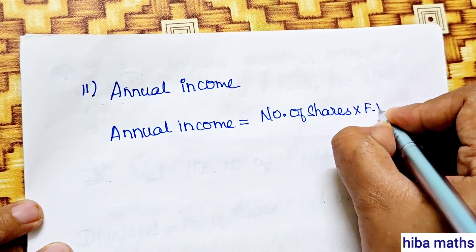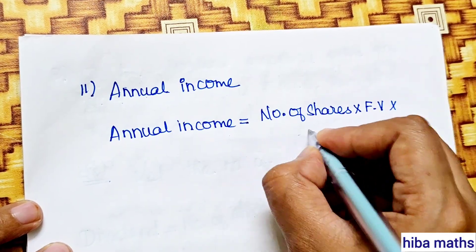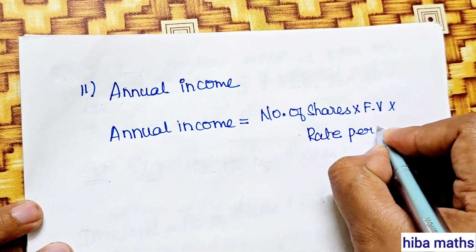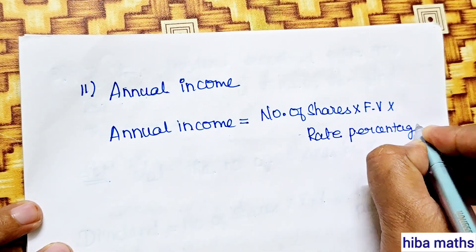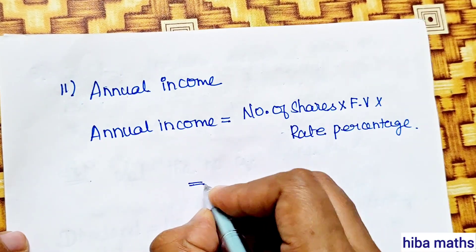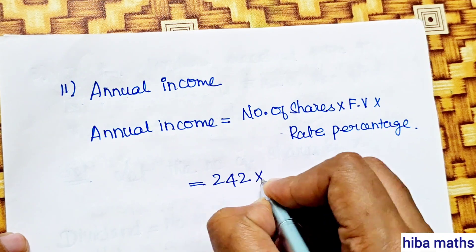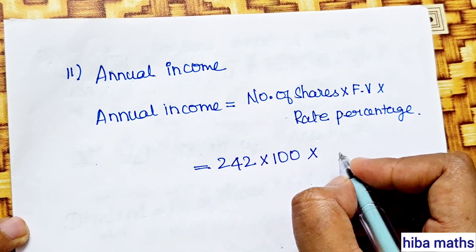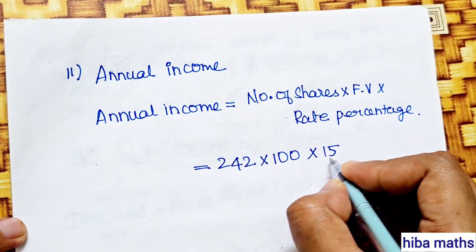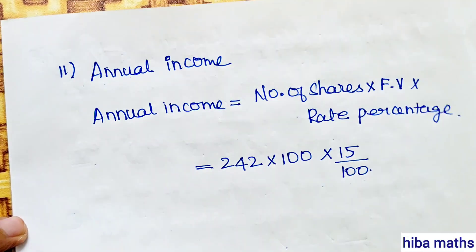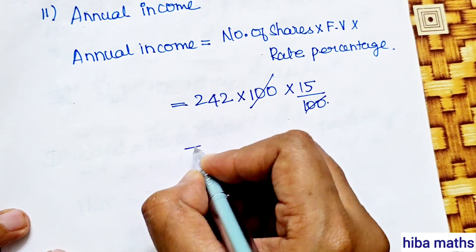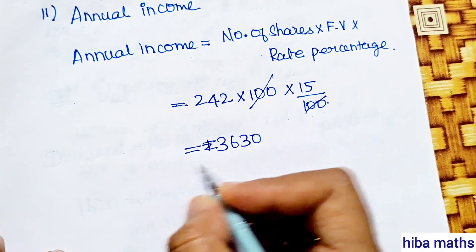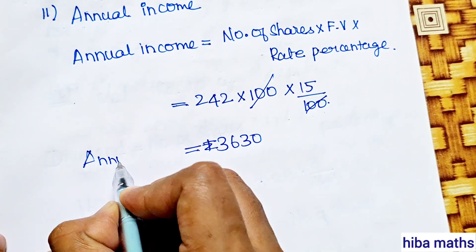Annual income equals number of shares into face value into rate of percentage. Rate is 15%, so 15 by 100. After cancelling 100 and 100, we multiply to get annual income of rupees 2630.